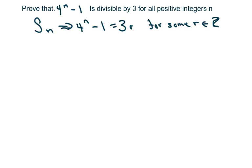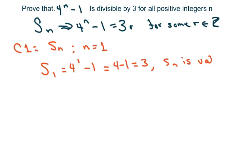For condition 1, we want to verify that our sequence is valid for n equals 1. So I'm going to plug it in, and I get S1 equals 4 to the first power minus 1, which equals 4 minus 1, which equals 3. Since 3 is divisible by 3, we can show that Sn is valid for n equals 1.